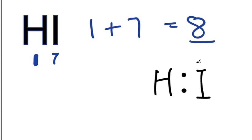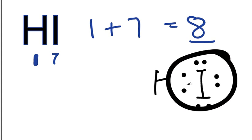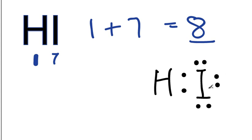So we've used 2, 4, 6, 8. Now the iodine has a total of 2, 4, 6, 8. Its outer shell is full.